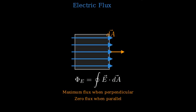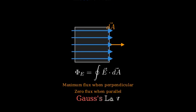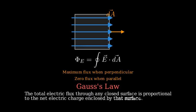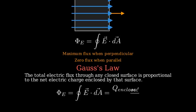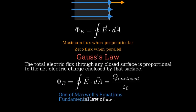Now we can state Gauss's Law formally. The total electric flux through any closed surface is directly proportional to the net electric charge enclosed by that surface. Mathematically, Gauss's Law is expressed as Φ_E equals Q_enclosed divided by ε₀, where Φ_E is the total electric flux through the closed surface, Q_enclosed is the net charge enclosed by the surface, and ε₀ is the permittivity of free space. This is one of Maxwell's equations and a fundamental law of electrostatics.